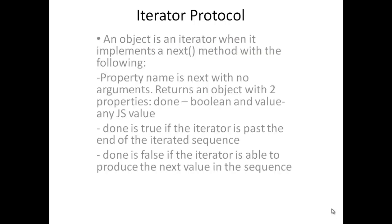The iterator protocol is what we are going to see in this session. An object is an iterator when it implements a next method. The property name is next with no arguments and it returns an object with two properties: done, which is a boolean value, and value, which is any JavaScript value. Done is true if the iterator is past the end of the iterated sequence, and done is false if the iterator is able to produce the next value in the sequence.